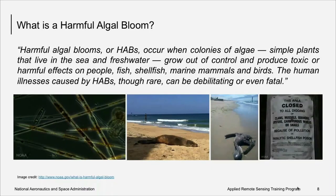In week one, we provided a description of what a harmful algal bloom is. Harmful algal blooms, or HABs, occur when colonies of algae — simple plants that live in the sea and freshwater — grow out of control and produce toxic or harmful effects on people, fish, shellfish, marine mammals, and birds. The human illnesses caused by HABs, though rare, can be debilitating or even fatal.